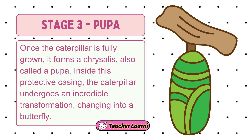Stage 3 – The Pupa. Once the caterpillar is fully grown, it forms a chrysalis, also called a pupa. Inside this protective casing, the caterpillar undergoes an incredible transformation, changing into a butterfly.